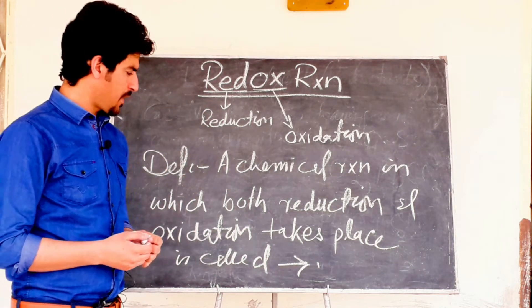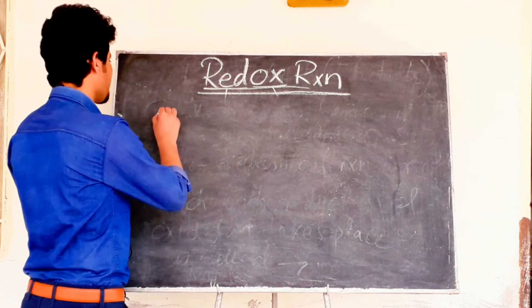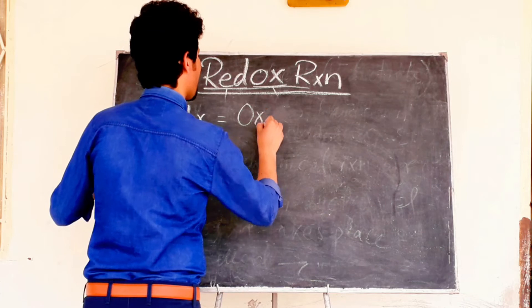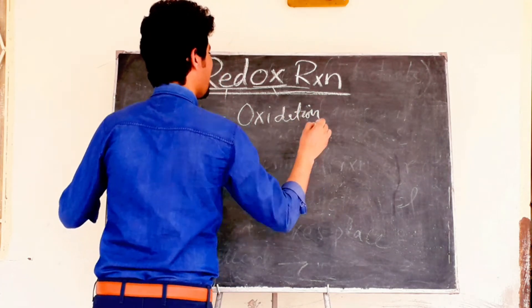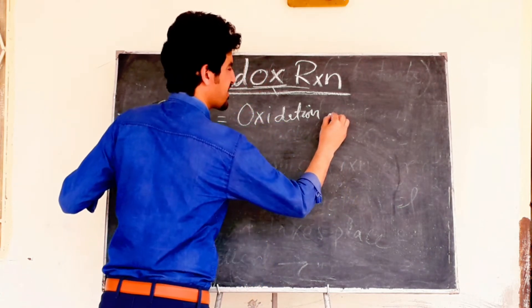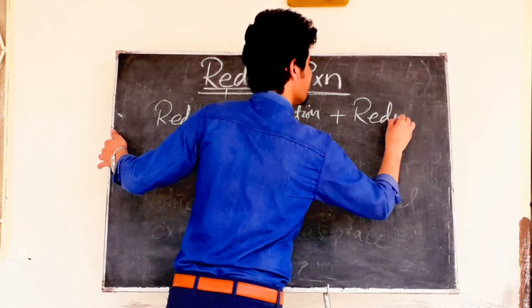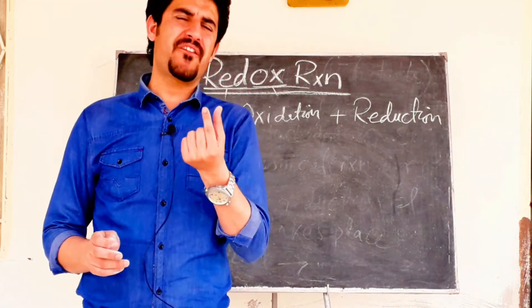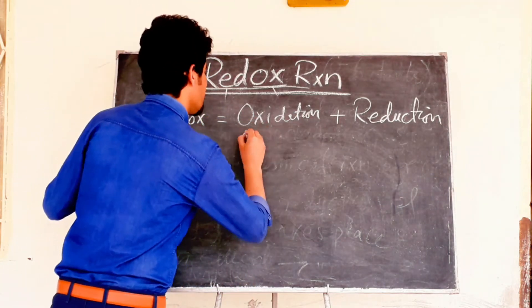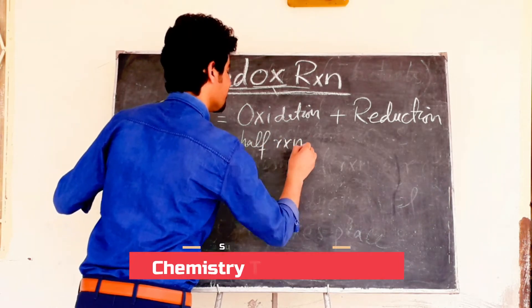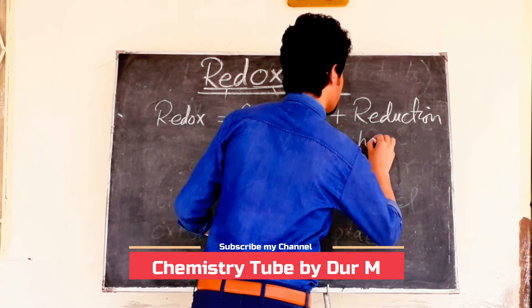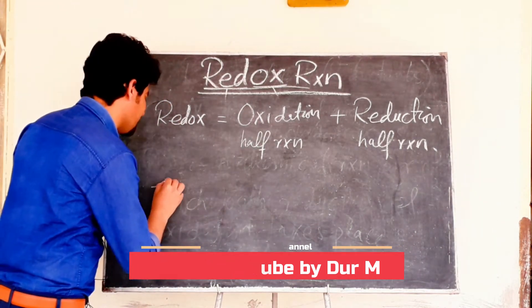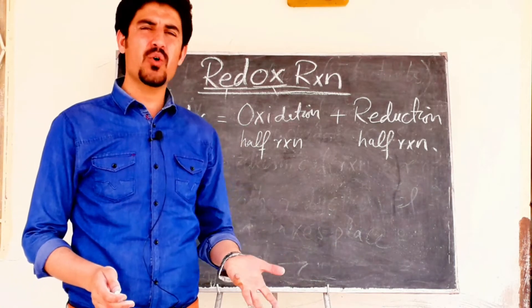So we can say that the redox reaction is the sum of oxidation reaction and reduction reaction. One species reduces while another oxidizes at the same time.